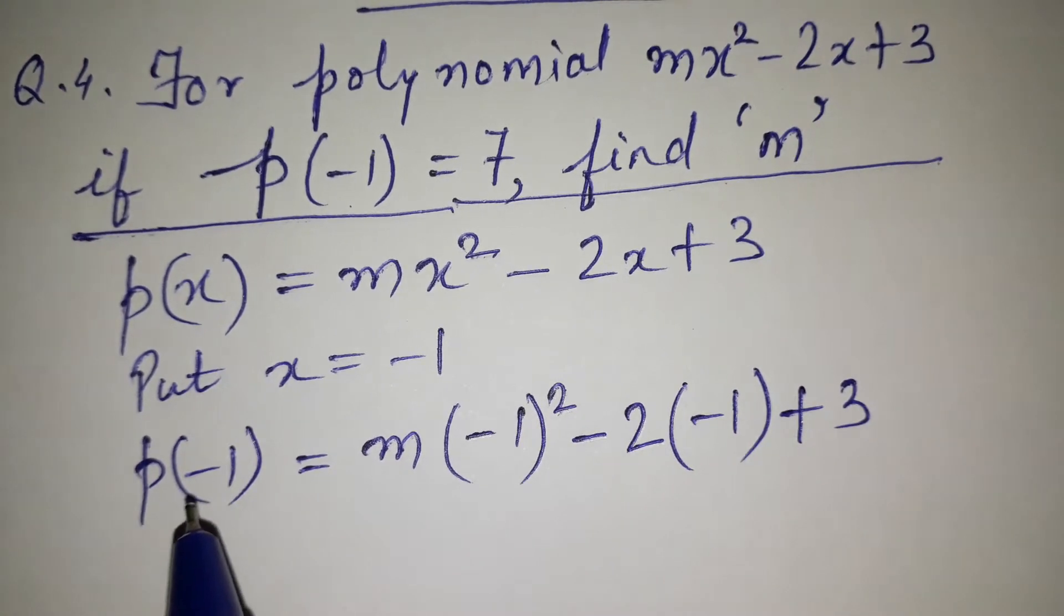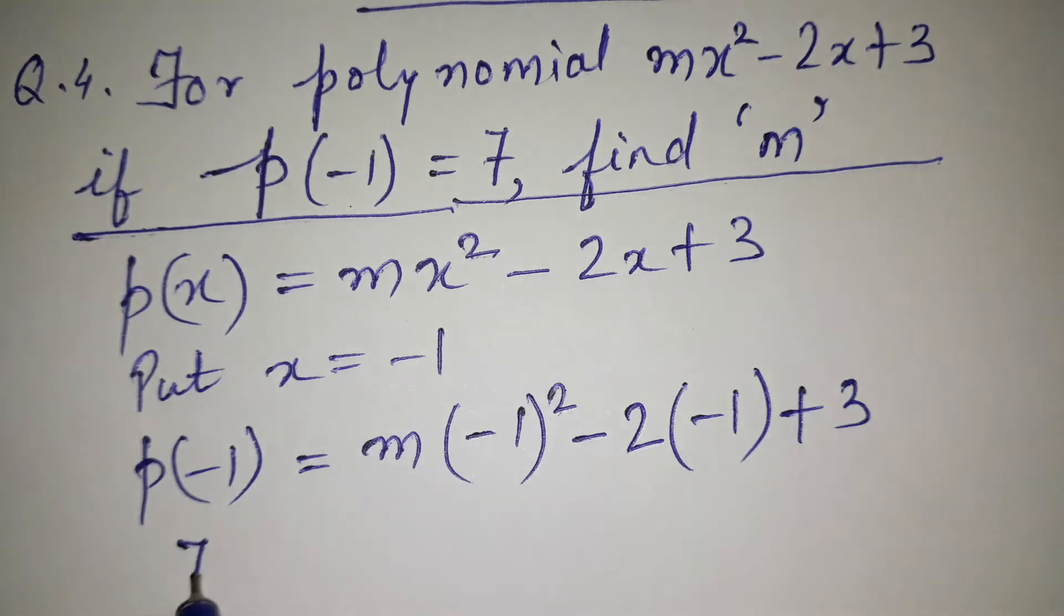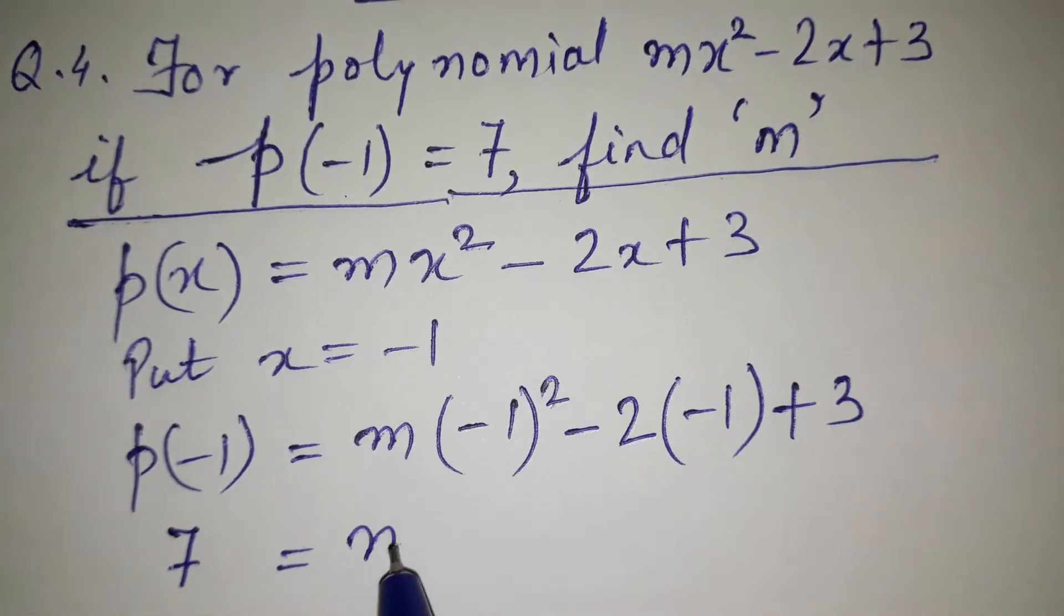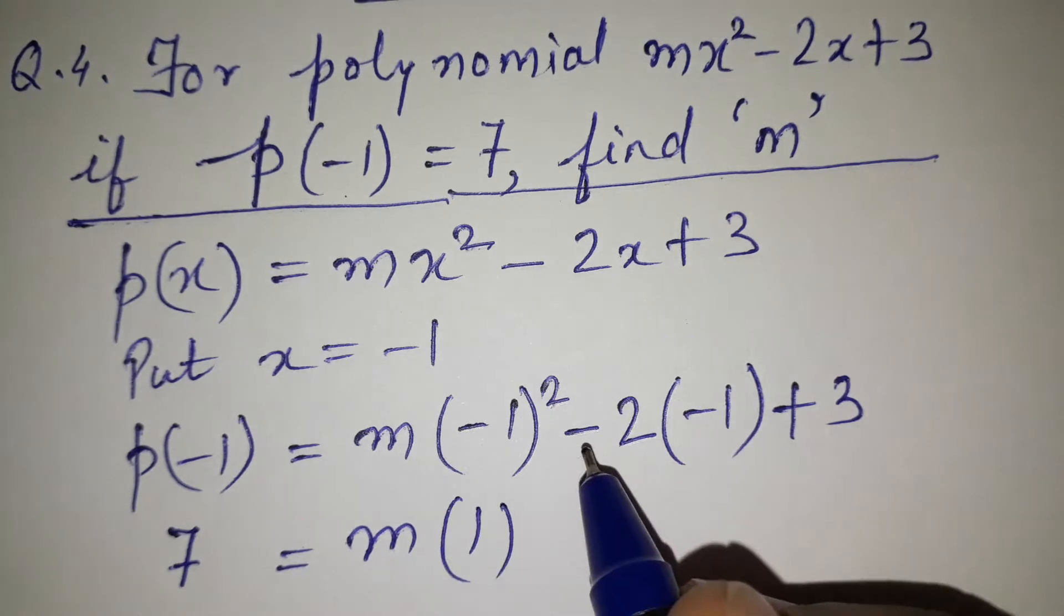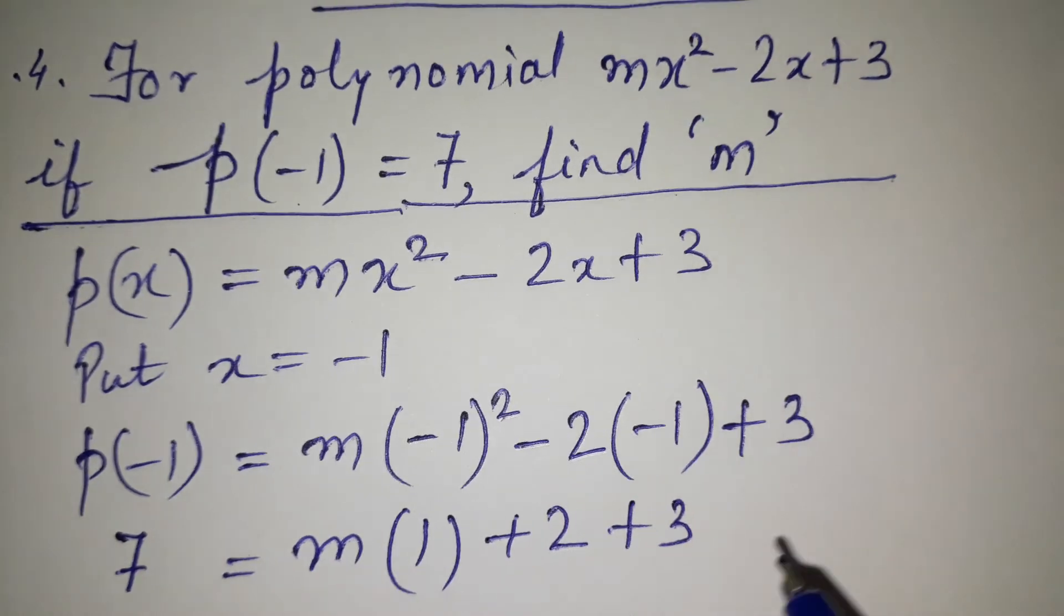It has been given that p(-1) = 7, so we can write 7 = m(-1)², which is 1, minus 2(-1), which is +2, plus 3.